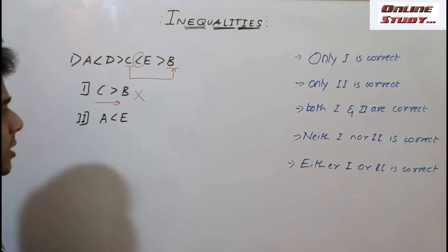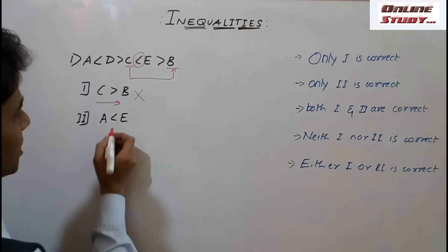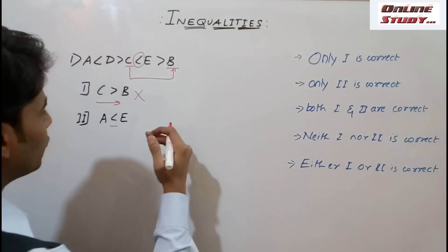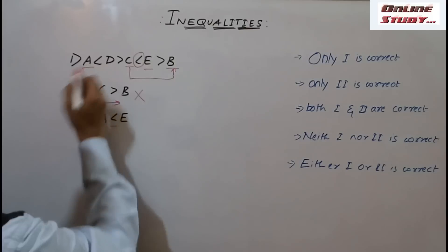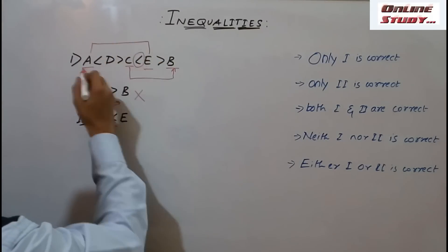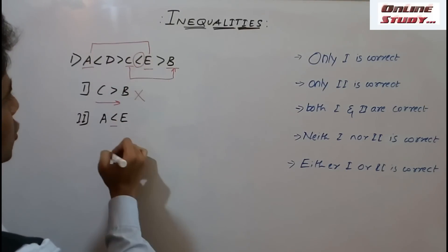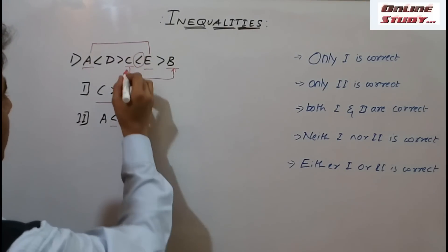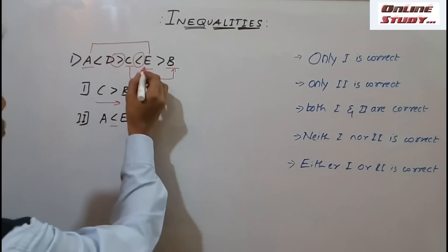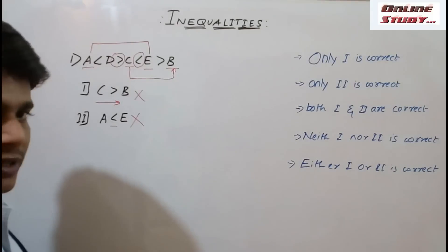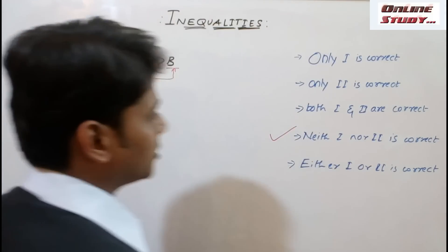Now let us take the next conclusion: A is less than E. We have to move from E to A because the gate is open at E. In the statement, E is here and A is here. From E to C, it is possible — the gate is open. But from C to D, it is not possible because the gate is closed. So we cannot move from E to A. This conclusion also fails. Therefore, neither conclusion one nor two is correct.